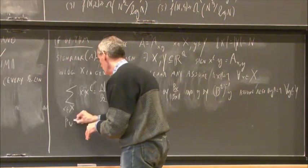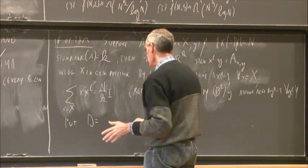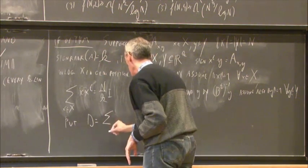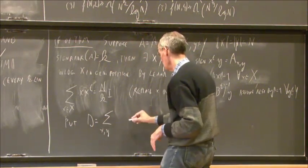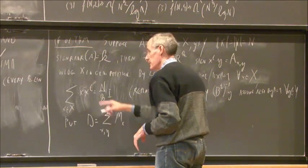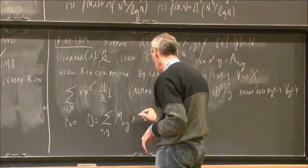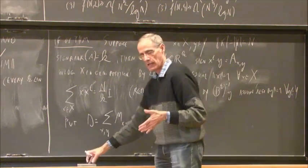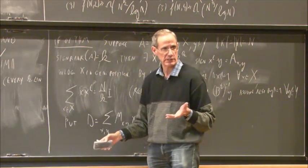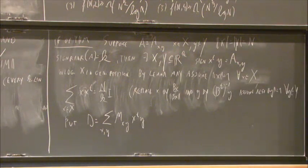Define D = Σ_{x ∈ X, y ∈ Y} m_{xy} · (x^T y). We find both an upper bound and a lower bound for D and compare them to get the statement of the theorem. Writing out the inner product: D = Σ_{i=1}^k [Σ_{x,y} m_{xy} x_i y_i], which is a sum of k quadratic forms. The upper bound comes from bounding each quadratic form by the operator norm of M times the norms of the vectors.